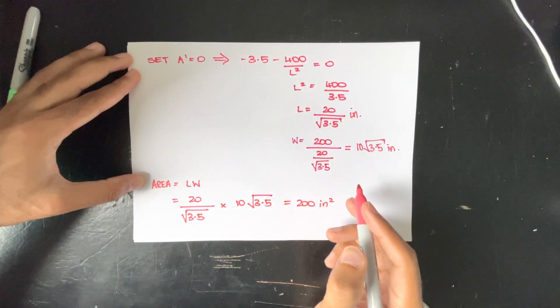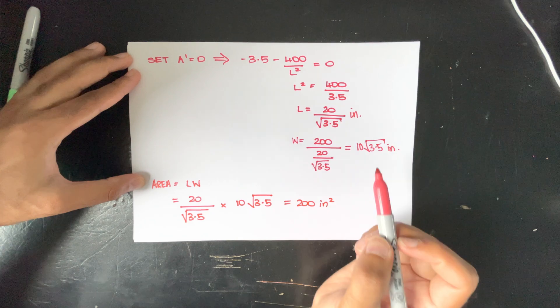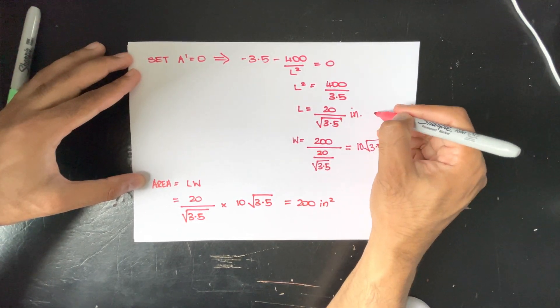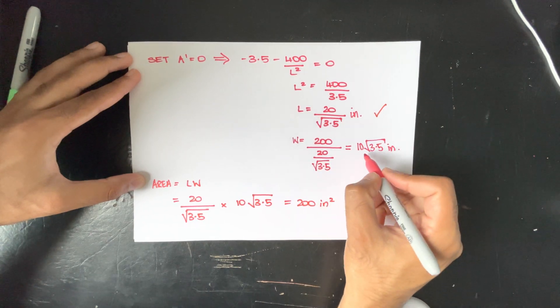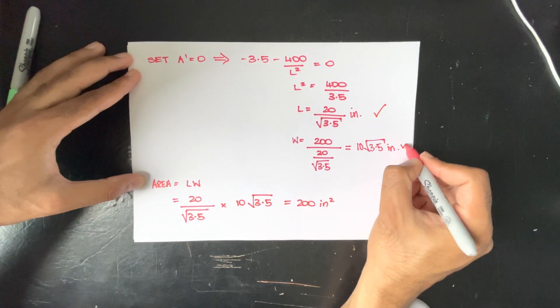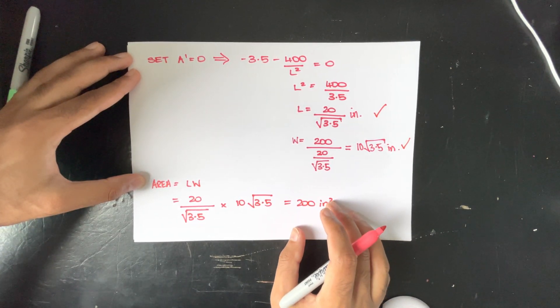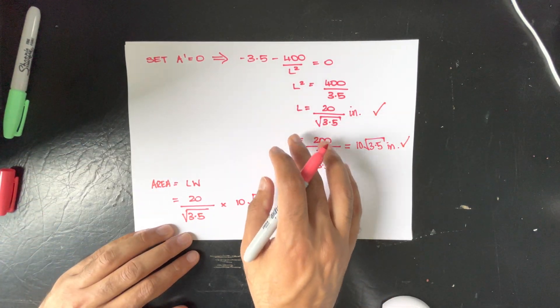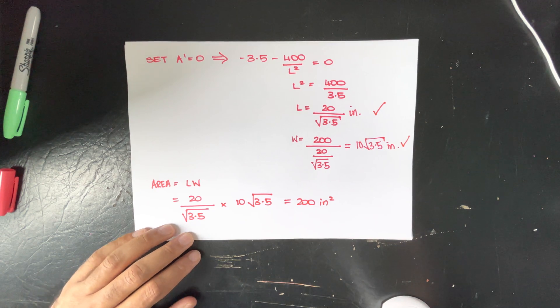So we know that its length is 20 divided by square root of 3.5 and its width is 10 square root of 3.5 and they're both inches. So we know that to be correct and they would be our dimensions that would produce the largest area.